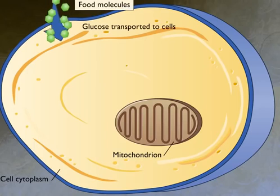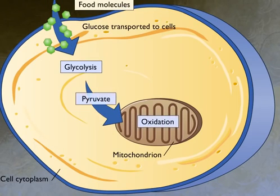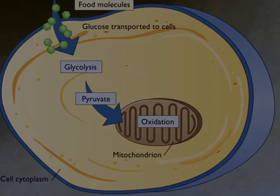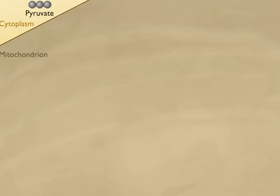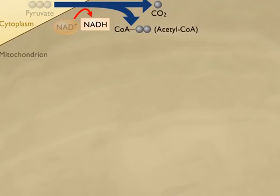During glycolysis, glucose is broken down to pyruvate. A two-carbon fragment of pyruvate is used to form acetyl CoA. The acetyl CoA enters the Krebs cycle, which occurs in the mitochondrion.